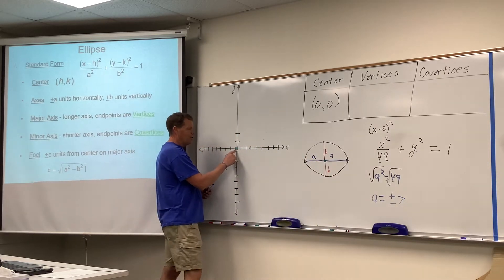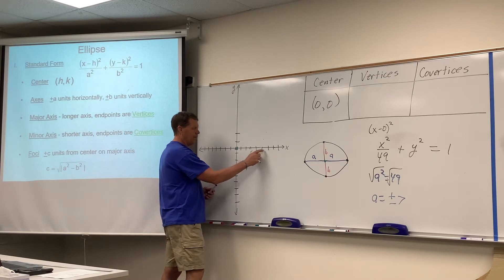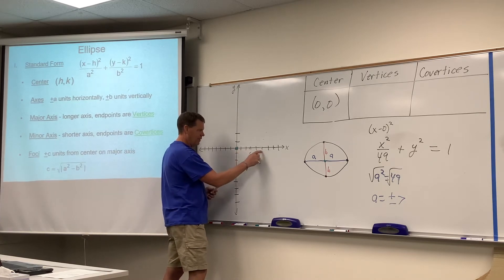So, from that center point, 7 units to the right, 1, 2, 3, 4, 5, 6, 7, 1, 2, 3, 4, 5, 6, 7.